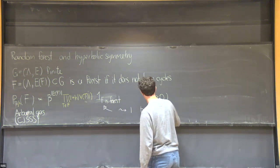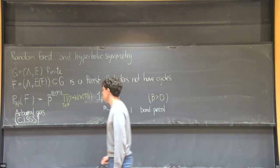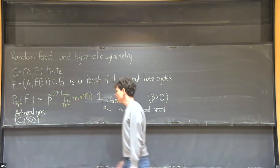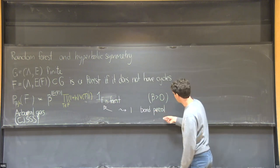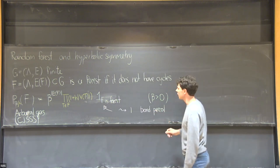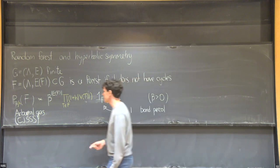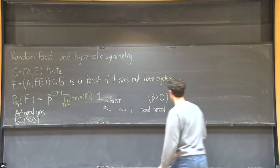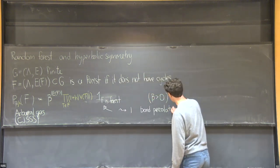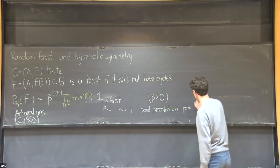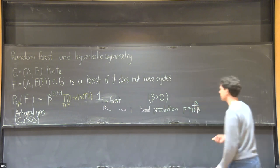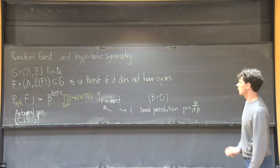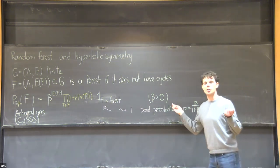In bond percolation, dropping the external field for the moment, it's Bernoulli bond percolation with the probability that each edge is kept equal to beta divided by one plus beta. Said differently, the arboreal gas is just bond percolation conditioned to be a forest.